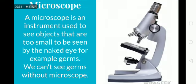Microscope. A microscope is an instrument used to see objects that are too small to be seen by the naked eye. For example germs. We can't see germs without microscope.